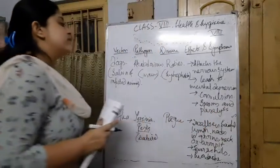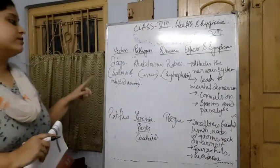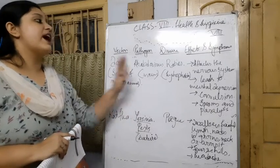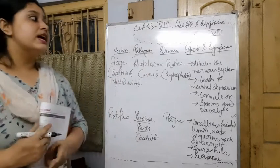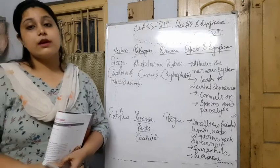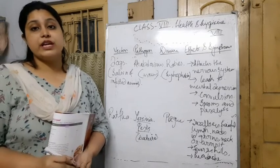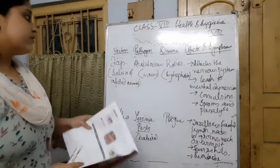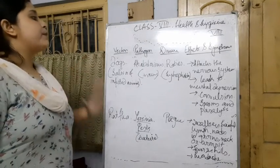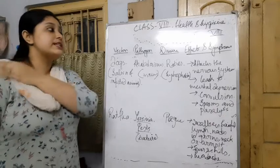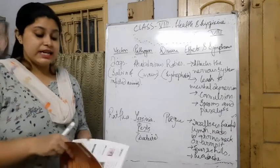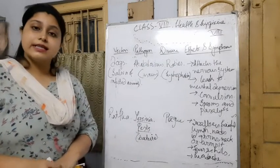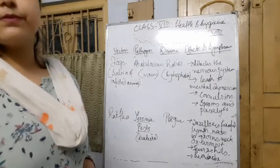When a dog bites a person and that person has rabies, they must take the proper injections to be cured. With this, the vector-borne diseases section has been completed. In the next video, we will talk about the prevention of these diseases. Thank you.